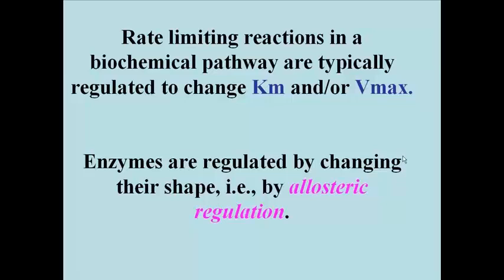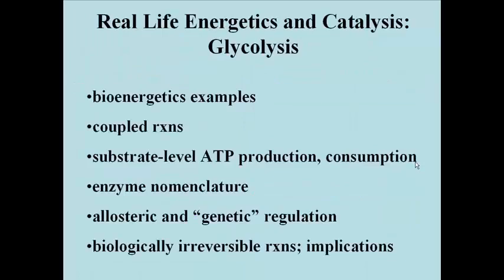We saw that enzymes are indeed regulated by changing their shape, by allosteric regulation. We're going to use glycolysis to illustrate some real-life bioenergetics examples. We're going to discuss the role of coupled reactions in making energetically unfavorable reactions proceed. We're going to look at substrate-level ATP production, examine enzyme nomenclature, and see real-life examples of allosteric regulation and genetic regulation. We're going to look at biologically irreversible reactions and their implications. Since all chemical reactions are inherently reversible, we're going to need to understand what a biologically irreversible reaction is.